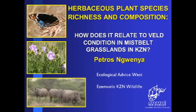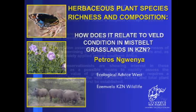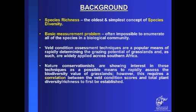Does poor condition mean that area is also poor in species diversity? By way of background, species richness is the oldest and simplest concept of species diversity. However, there has been a problem in measuring species diversity in the sense that it is often impossible to enumerate all of the species in a biological community, especially in tropical regions which are very species rich. Some ecologists came up with methodologies to estimate the total number of species in a community, one of which is the jackknife estimate of species richness used in this study, as described by Professor Krebs.